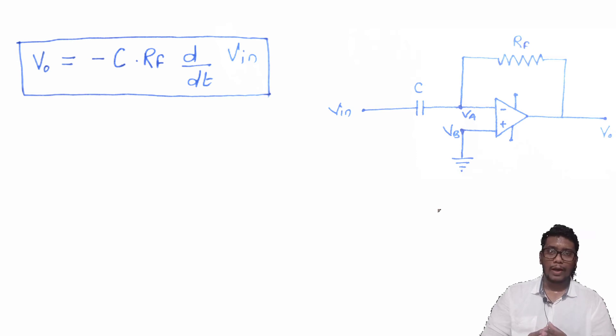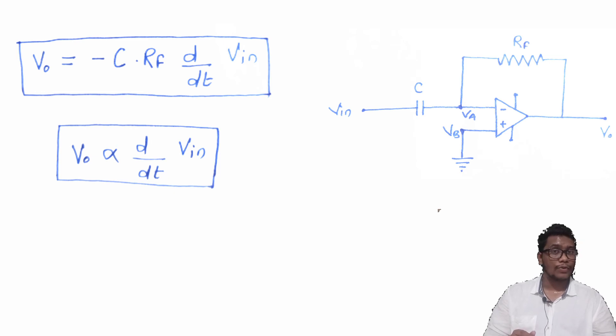As I told you earlier in the definition, the output voltage that is V0 is the differentiation or derivative of an input voltage that is VIN.